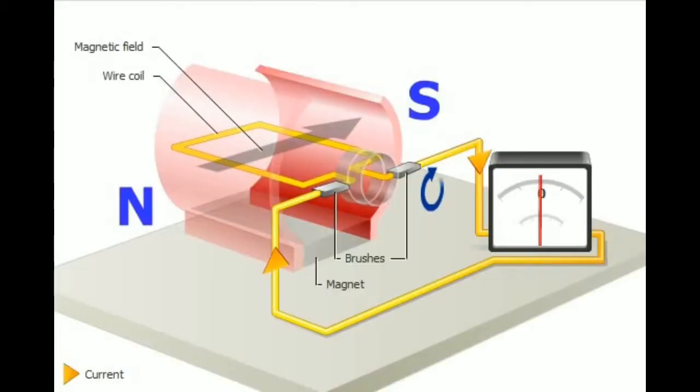When the coil is turning in the direction shown, current flows toward the right in the far side of the coil and toward the left in the near side.